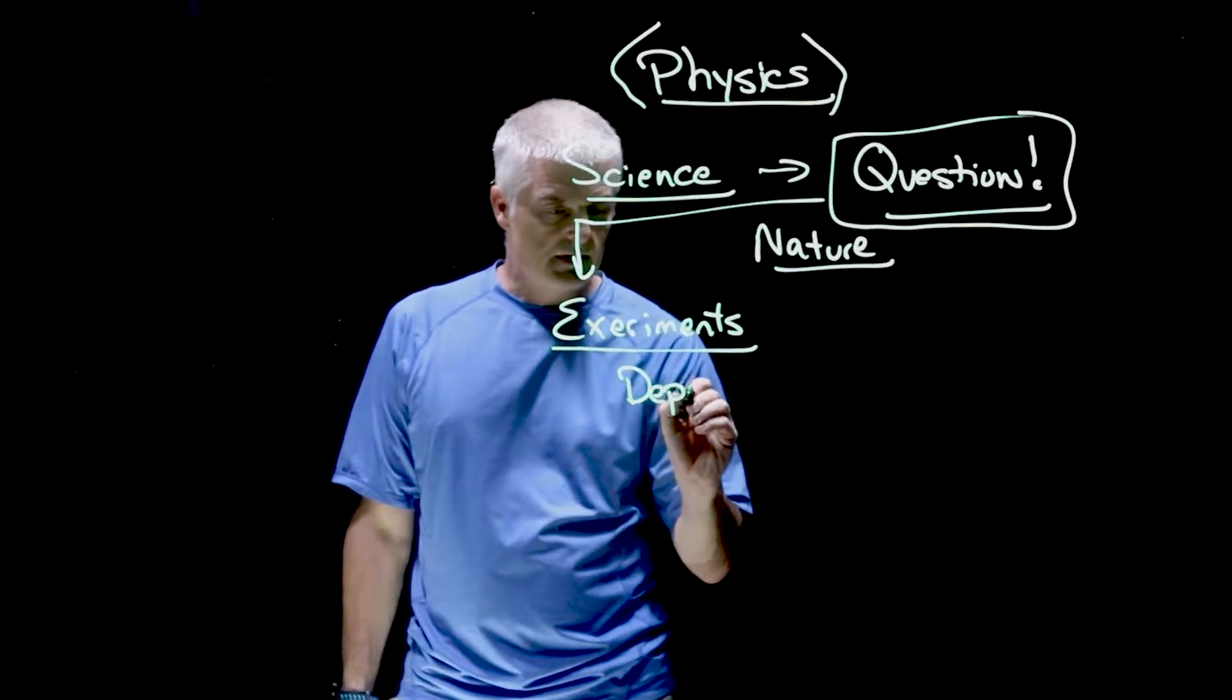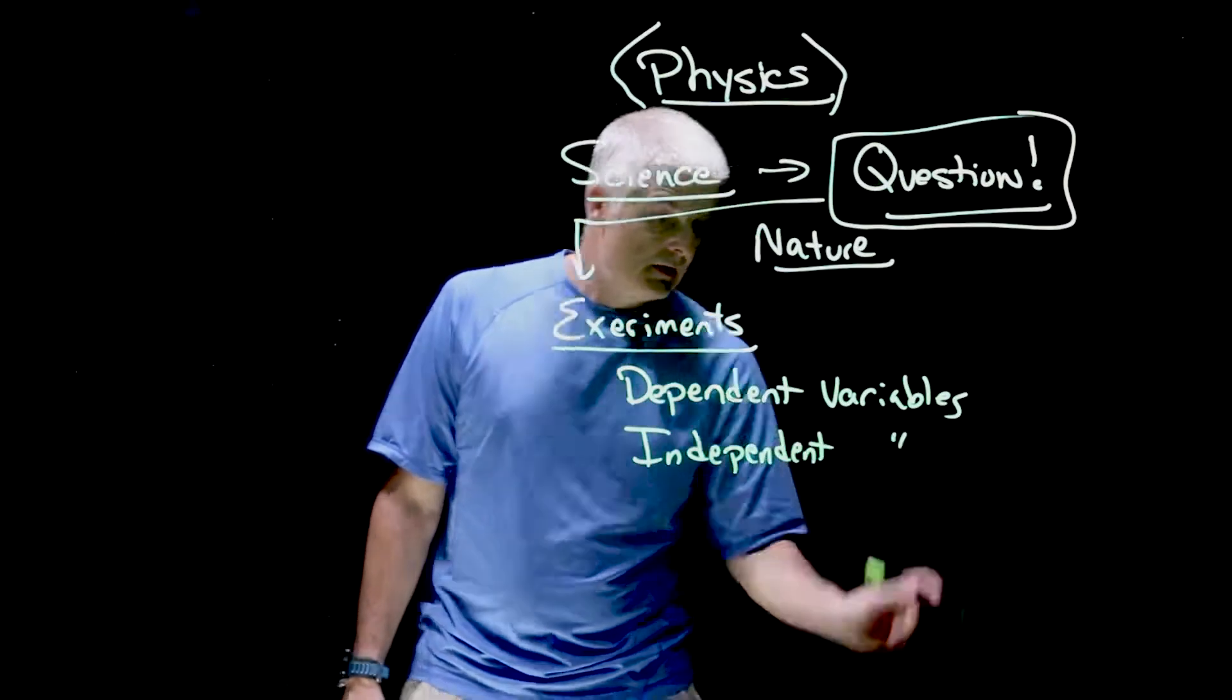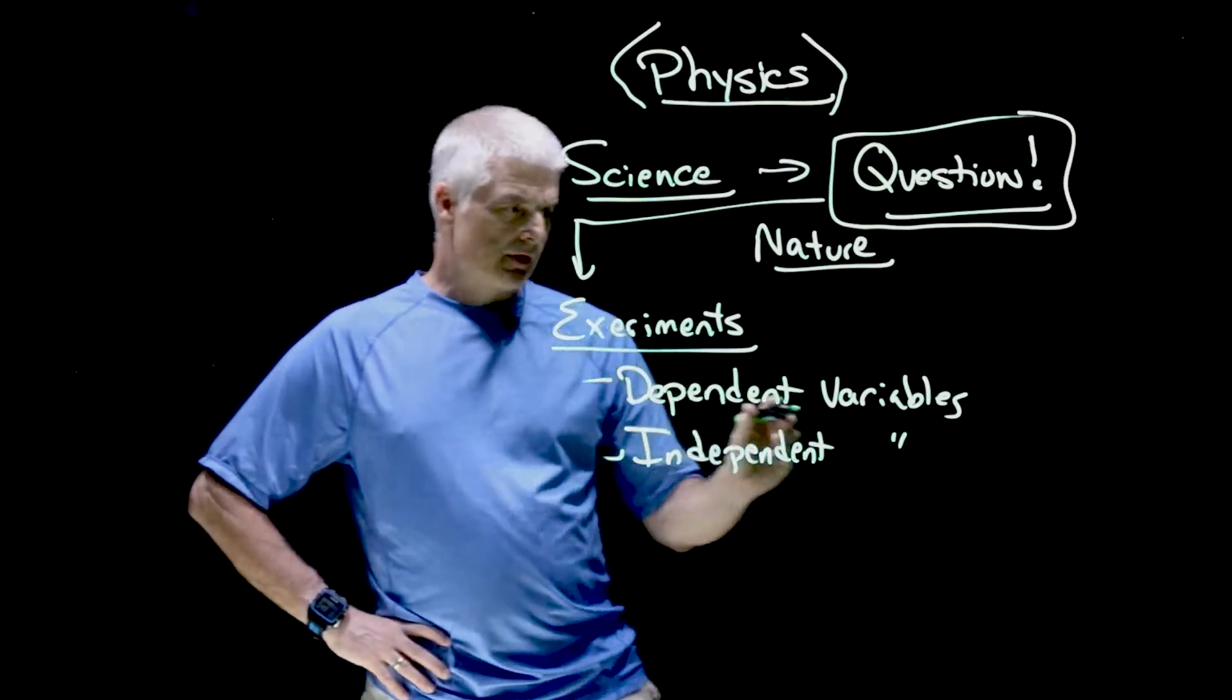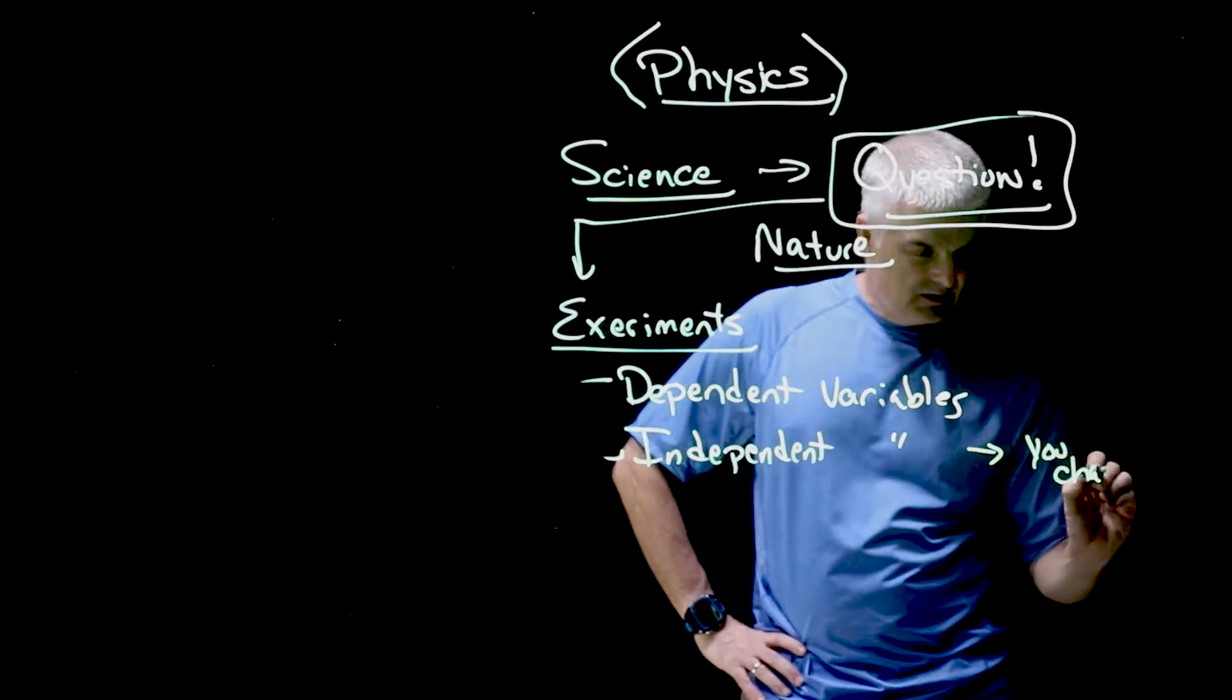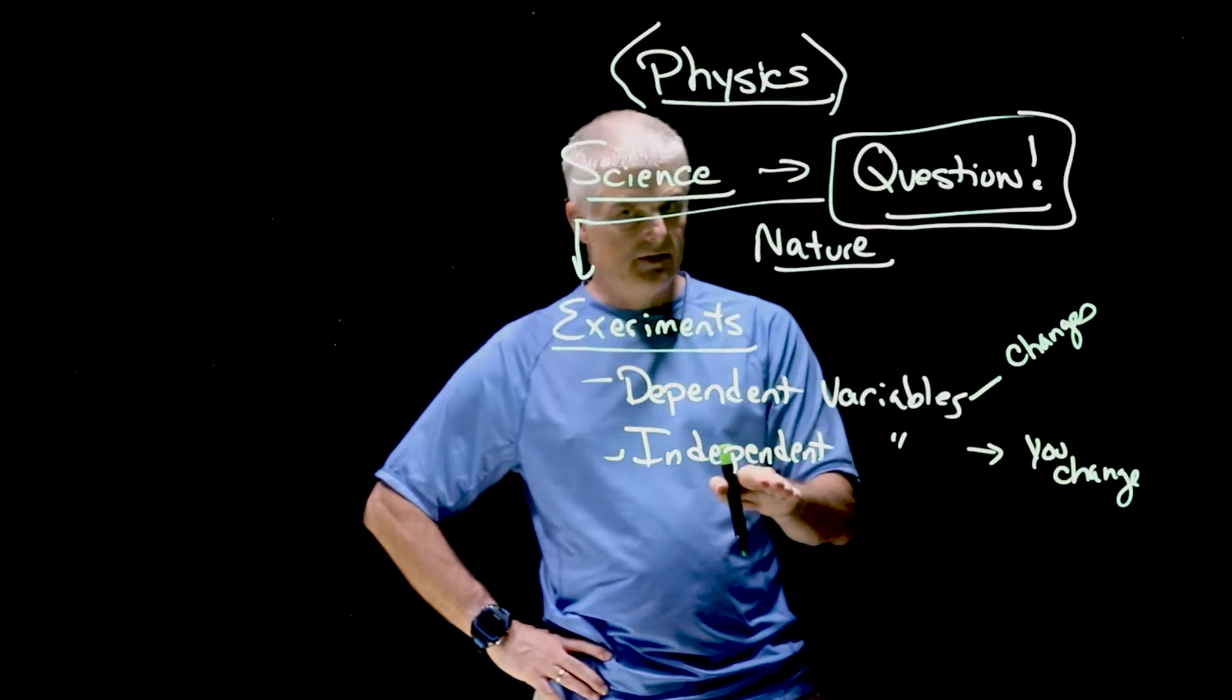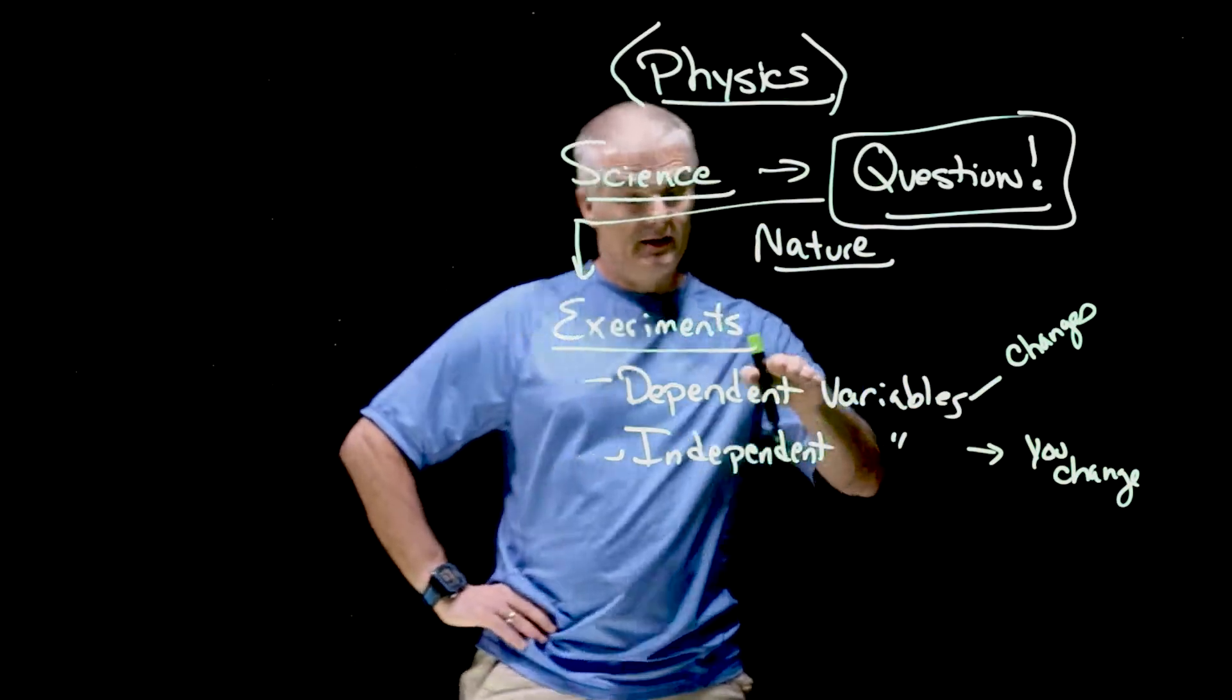There are dependent variables and, of course, independent variables. So what's the difference? I think the best way to understand it is to start with the second one that I've written. This is the one that you change, and this is the one that changes. Independent you change. Dependent is caused by the independent.